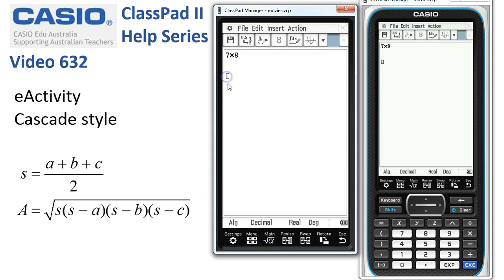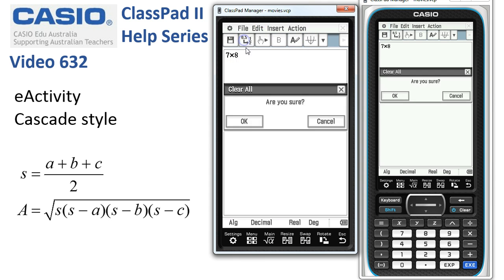But we've got a calculation line waiting down here, and we could tap onto action and toggle it back to being a text line. Let's start again. File, New, OK.